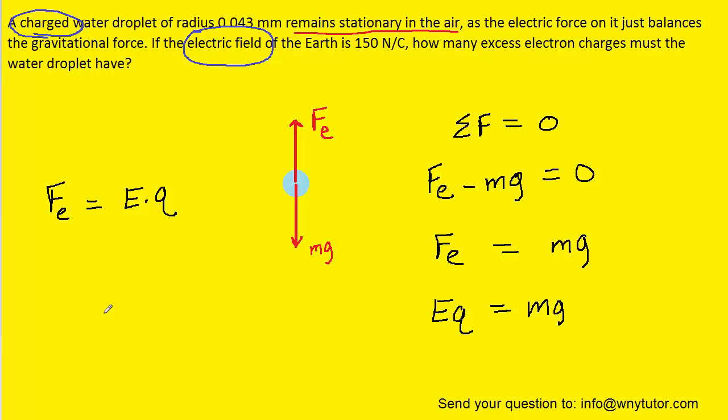In addition, we know that for any object, the density of that object is going to equal its mass divided by its volume. And if we multiply both sides of that equation by volume, we would have volume times density equals the mass.